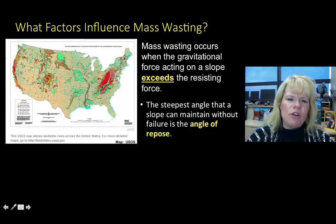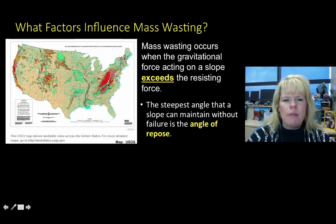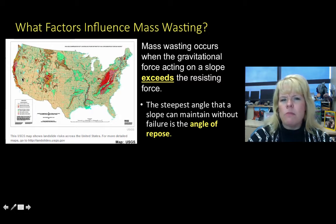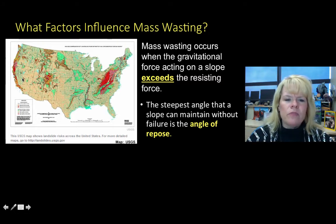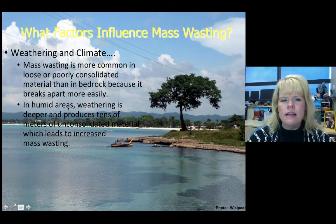Mass wasting is going to be very common where you have steep slopes, like along mountain ranges of the Appalachian Mobile Belt, the Cordilleran Belt, all the way through the Rockies, and anywhere that has mountains or shorelines. We actually have hill country right here in Texas — that's why we're prone to mass wasting.